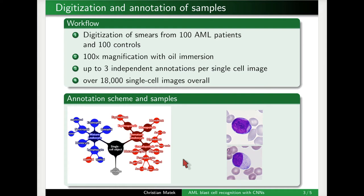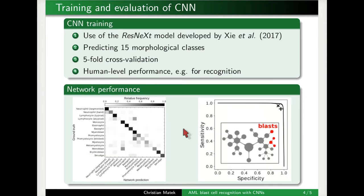Building on that large-scale dataset of 18,000 cells — which we made available to the public — we developed a convolutional neural network model using the ResNeXt scheme, a very successful network used in the classification of natural images.